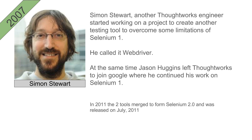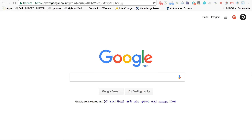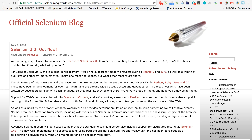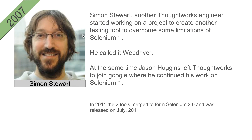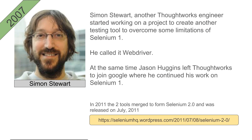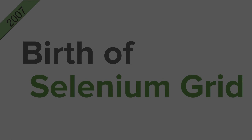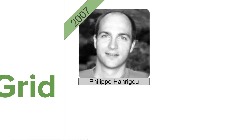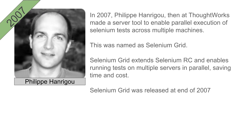In 2011, the two tools — Selenium 1 and WebDriver — were merged to form Selenium 2 and released in July 2011. If you go to the official announcement blog of Selenium, you can see the July 8, 2011 announcement for Selenium 2.